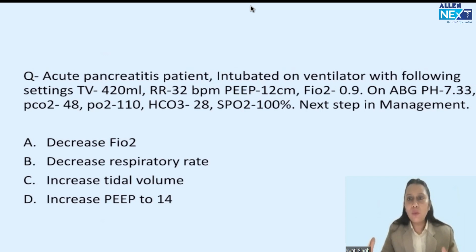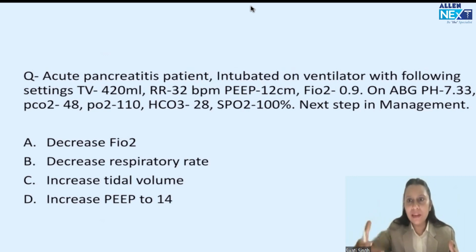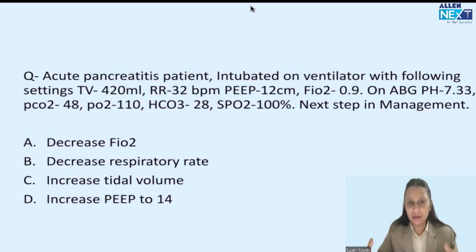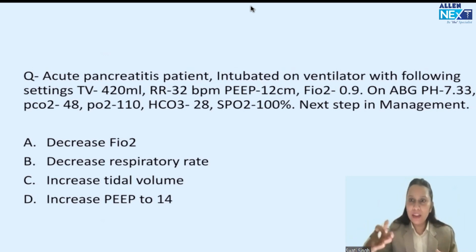We put a patient on a ventilator to maintain oxygenation and ventilation, and meanwhile we treat the primary disease — in this case, acute pancreatitis, which is a known cause of ARDS, acute respiratory distress syndrome. Because of the release of inflammatory mediators in the blood, lung damage happens. For a patient in ARDS, we always go for lung-protective ventilation. We protect the lung, ventilate, treat the primary condition, and maintain the oxygenation and ventilation of the patient.